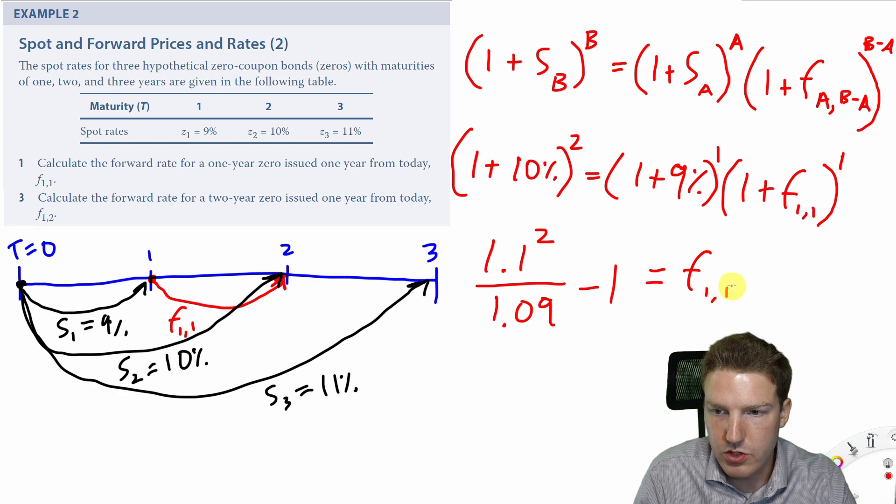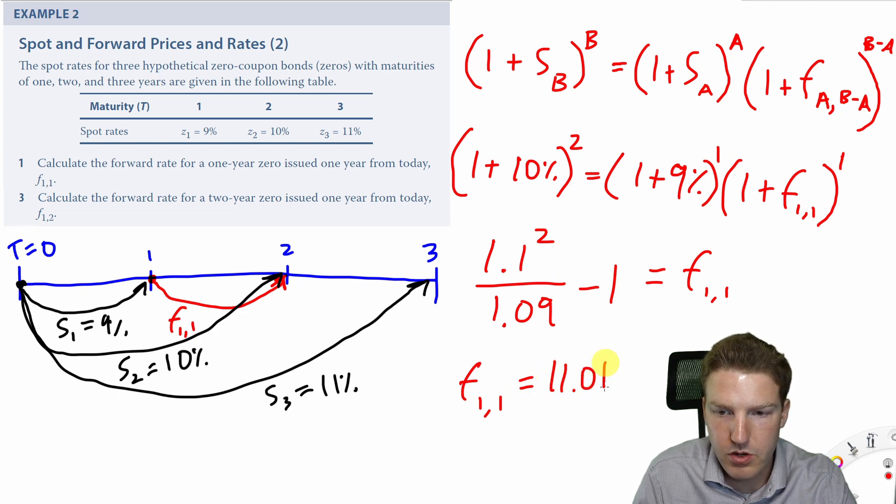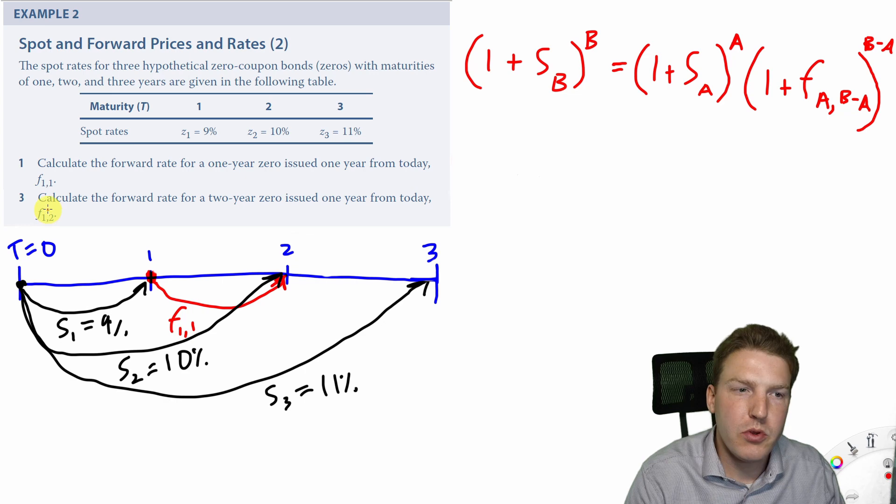And we'll find, when we put all that into our financial calculator, that the forward rate is equal to 11.01%.